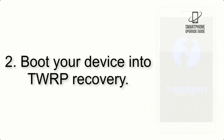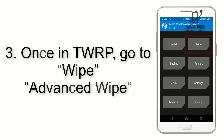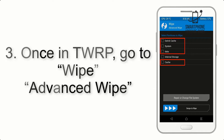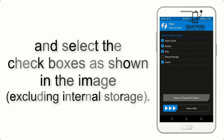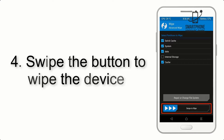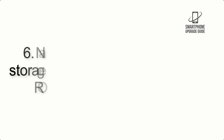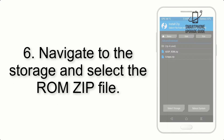Step 2: Boot your device into TWRP recovery. Once in TWRP, click on Wipe > Advanced Wipe and select the checkboxes as shown in the image, excluding internal storage. Step 4: Swipe the button to wipe the device.